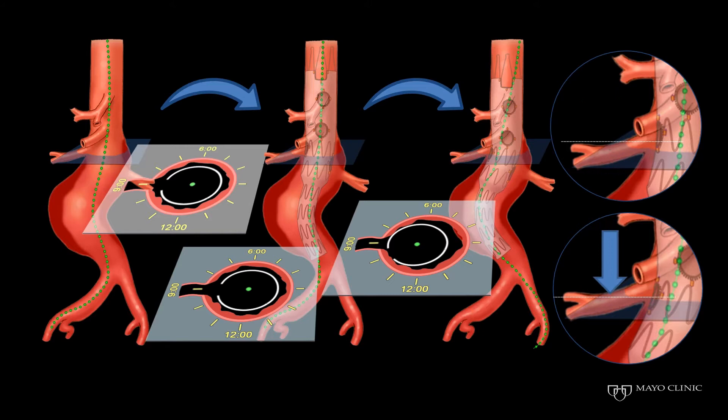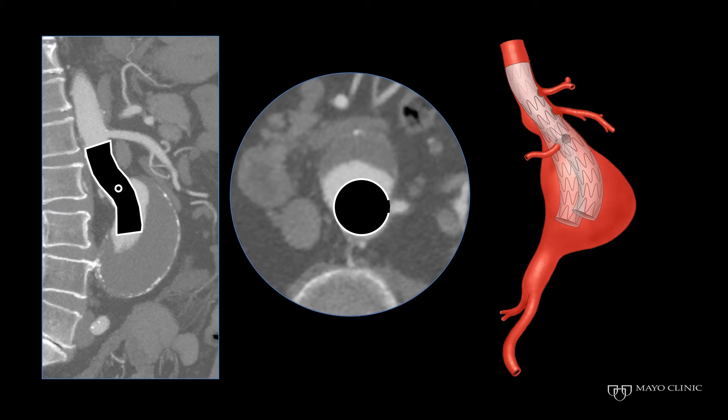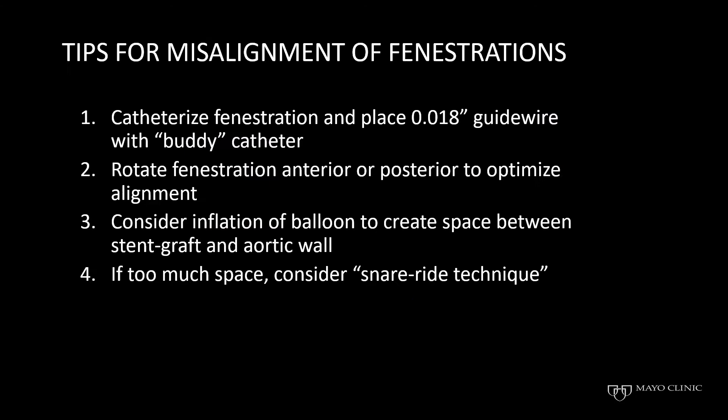This is based on a patient I performed approximately a year ago with a single fenestration to the renal artery. Even though I predicted the case was going to be uneventful, the graft actually displaced anteriorly and against the wall of the aorta, making fenestration catheterization very difficult.